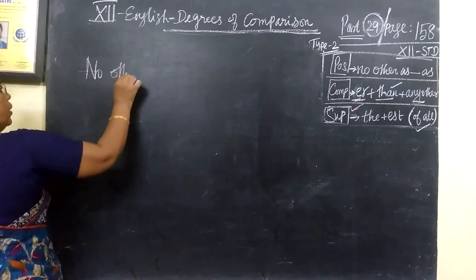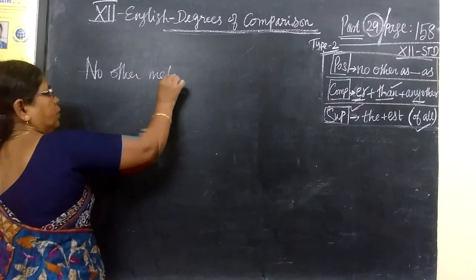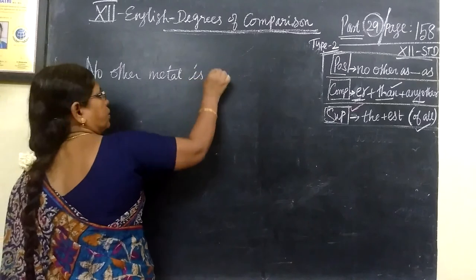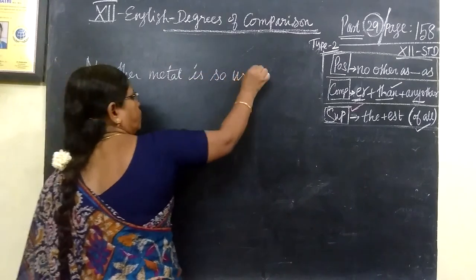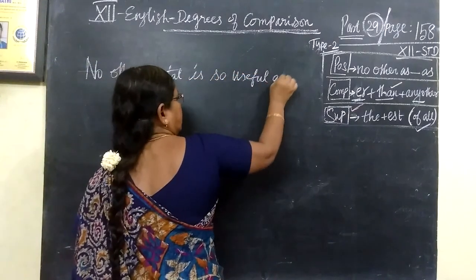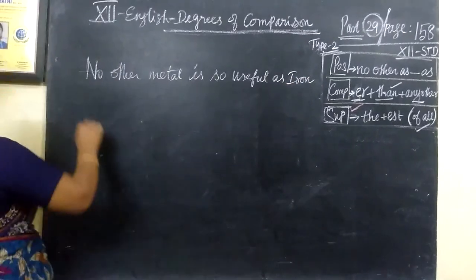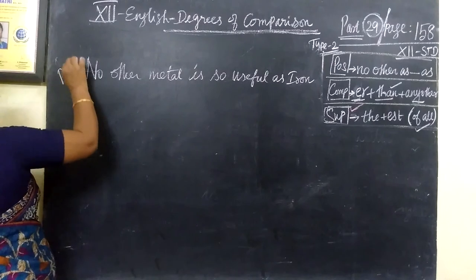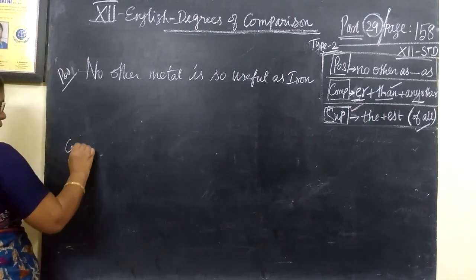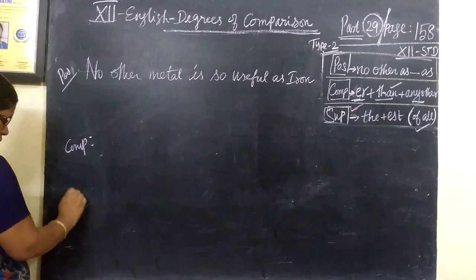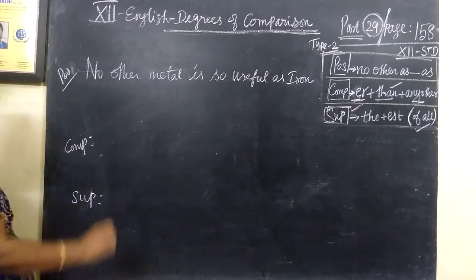No other metal is so useful as iron. Now here is 'no other.' This one is positive. So we are writing comparative and superlative form. Now here is the form.